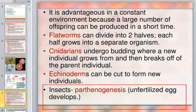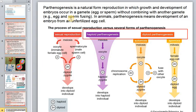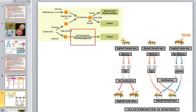Another type of rapid reproduction is parthenogenesis. It is a natural form of reproduction in which growth and development of embryos occur from a gamete — egg or sperm — without combining with another gamete. In animals, parthenogenesis means development of the embryo from unfused cells. There are haploid and diploid types of parthenogenesis, depending on the number of chromosomes in the female gamete.